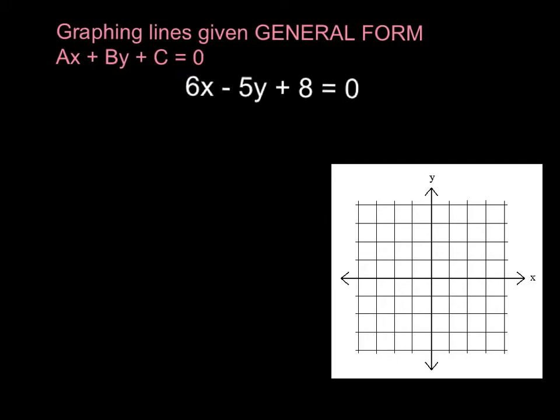As you can see here in our first example we've got 6x - 5y + 8 = 0. Now what does this all mean? How can I graph this? That's the disadvantage of looking at equations in general form. They're great for other applications but specifically for graphing we have to do a little bit of work.